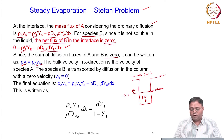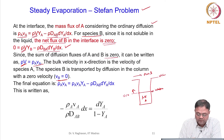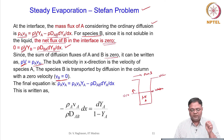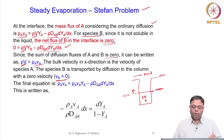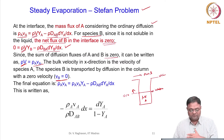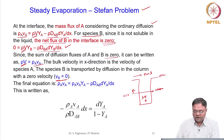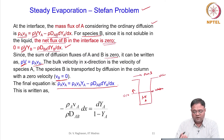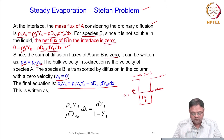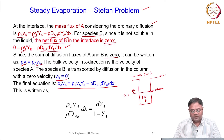The bulk velocity in the x direction is the velocity of species A. Species B is transported by diffusion in the column and its x-direction velocity V_B equals zero. The final equation: rho_A * V_A, the net flux of species A, equals rho * V, which is written as rho_A * V_A * Y_A minus rho * D_AB * dY_A/dx.